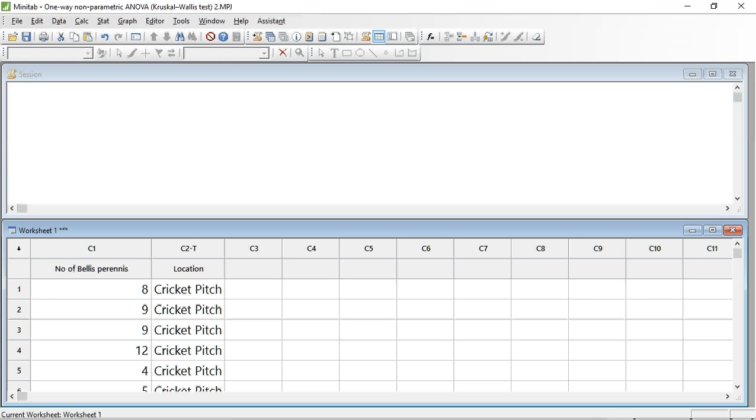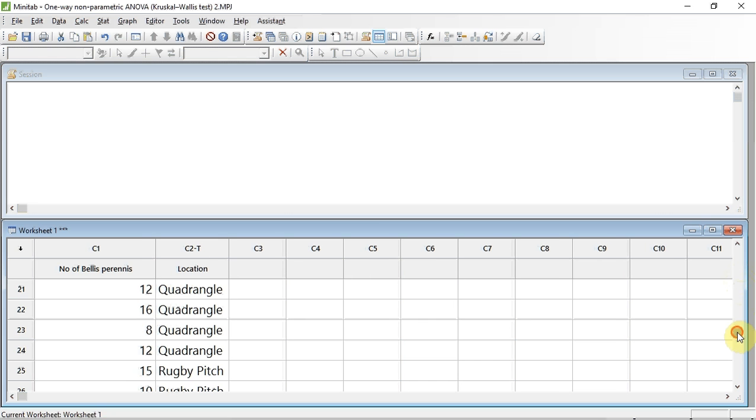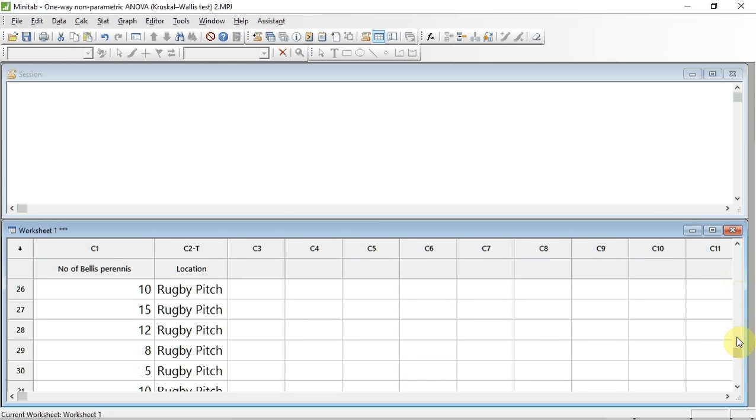I have already entered the data into Minitab. Column 1 contains the data stating the number of Bellis perennis or daisy plants found in each quadrat. Column 2 states the location of the quadrat. This is our factor. A factor is a variable that we can use to divide our main data set, which is column 1, into separate samples. As you can see, as we go down, we have the samples of the cricket pitch, followed by the lawn, the quadrangle and then the rugby pitch.